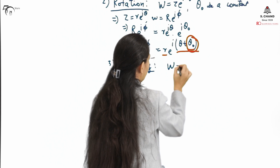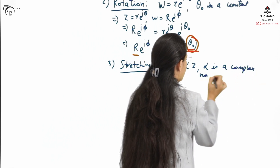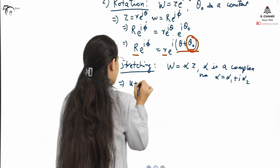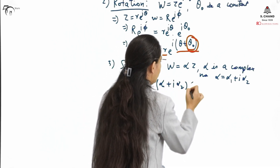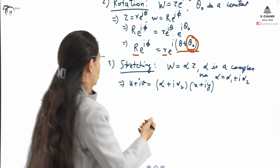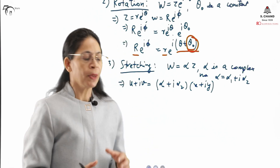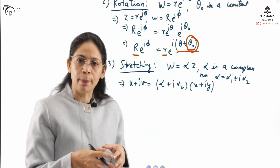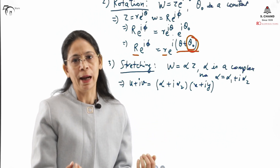The third transformation is stretching: W equals αZ, where α is a complex number that can be written as α₁ plus i·α₂. Resolving into real and imaginary parts gives U plus i·V equals (α₁ plus i·α₂)(X plus i·Y). When we substitute XY values from the XY plane, we find that the resulting U and V values show a stretching in the coordinates from the XY plane to the UV plane. This is therefore called the stretching transformation.